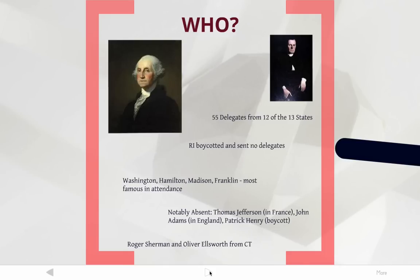So that is the who, what, when, where, why, and how of the Constitutional Convention. It took place in Philadelphia in 1787. 55 people from 12 of the 13 states attended. They all got sworn to secrecy and had to figure out a way to make a new government work. It took them a long time, and over the next couple of videos, we'll be looking at the debates they had at this convention.